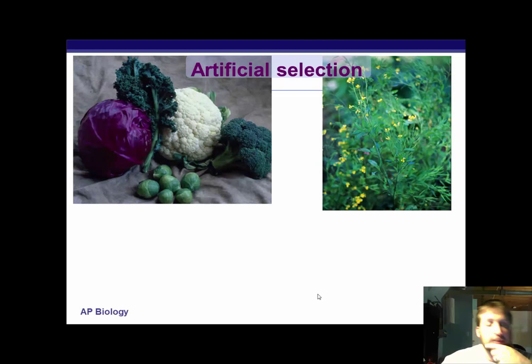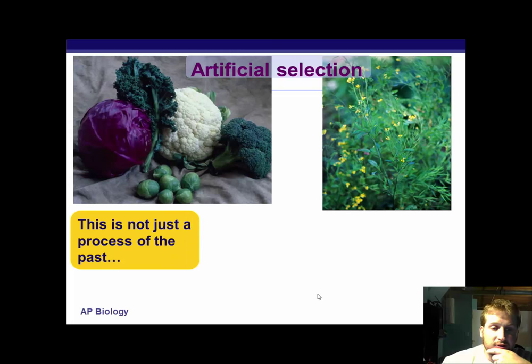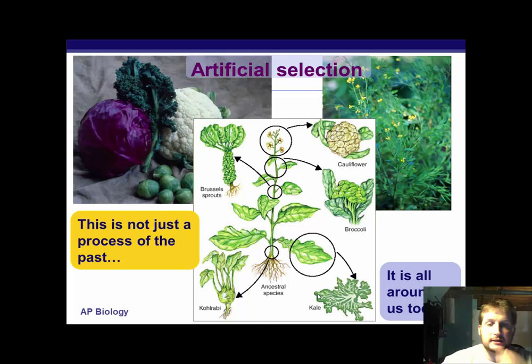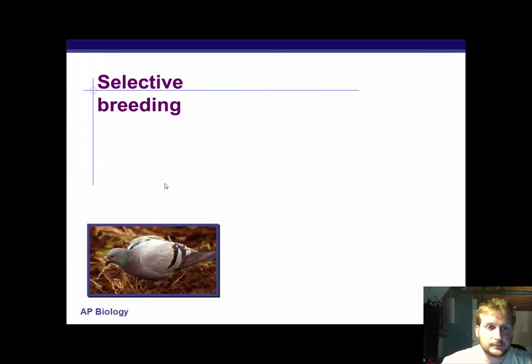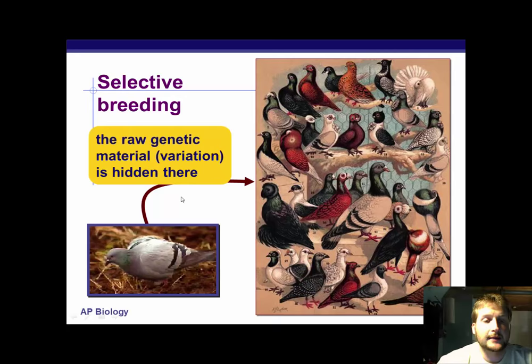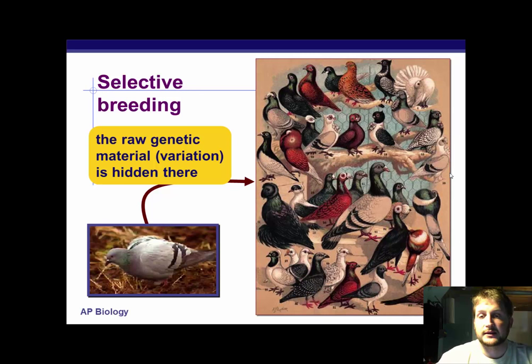How do we do this all the time? We have what we call artificial selection. On the right you have a typical mustard plant — this is not just a process of the past, we've done this for centuries. We're looking at an ancestral species that we've developed into Brussels sprouts, cauliflower, broccoli, kale, and kohlrabi. These are all done based on traits we have selected for as far as taste, color, nutrition, and all those types of things. Selective breeding is also found in pigeons — they used to take pigeons and breed them for all sorts of unique characteristics and qualities, and a lot of these are now actually extinct.